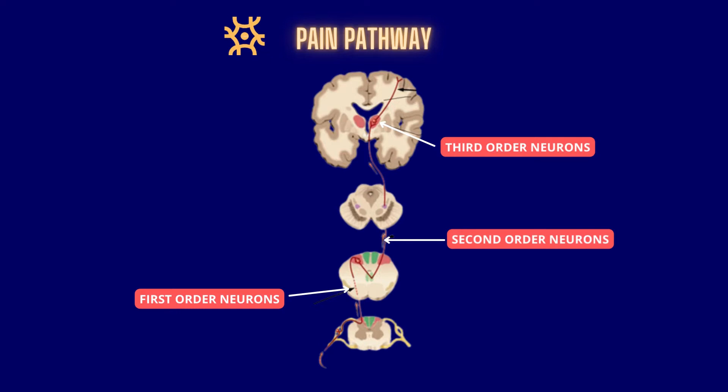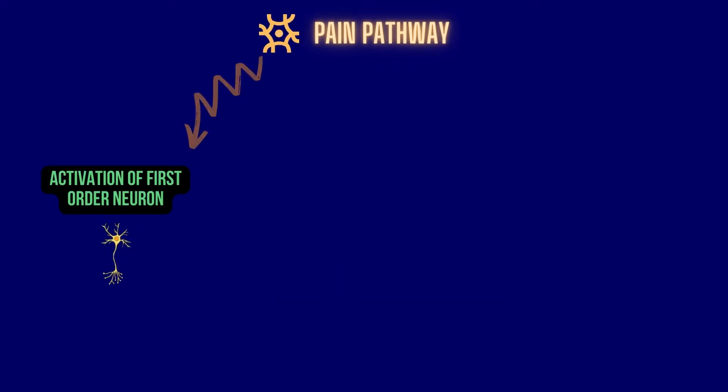The first mechanism of the pain pathway is activation of first-order neurons. Some first-order neurons have specialist receptors called nociceptors, which are activated through various noxious stimuli. Nociceptors exist at the free nerve endings of the primary afferent neuron.